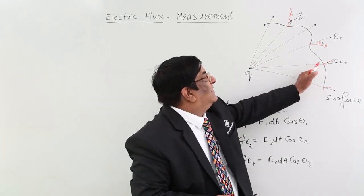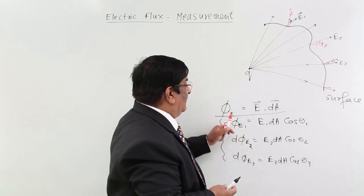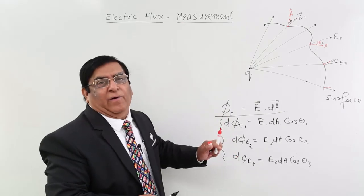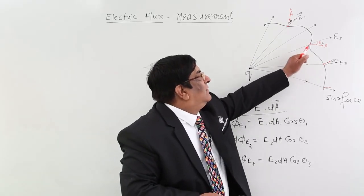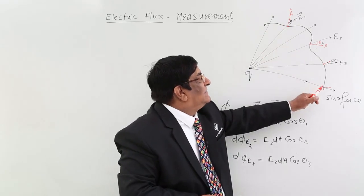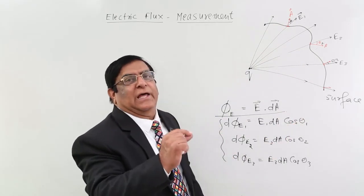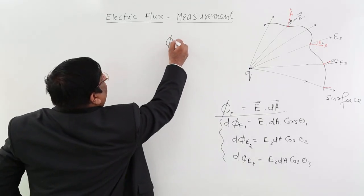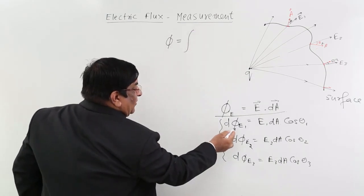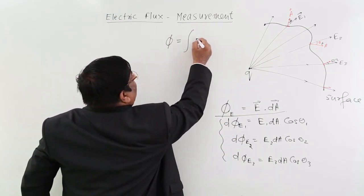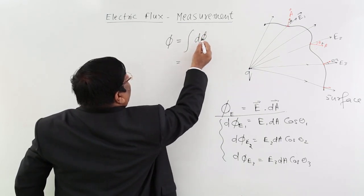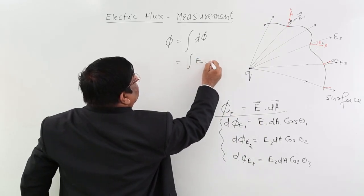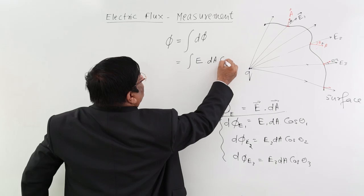So our phi calculations are correct. At every point we have taken separate phi and then we add up all. Add up all in mathematics, that is, we integrate all. If we have done very small areas, infinite areas, every area is approaching 0, then we have entered calculus and the total flux will be integration, all d phi's. So that will be integration of d phi's. And what are these d phi's integration? Those are E at every place, dA at every place into cos theta.